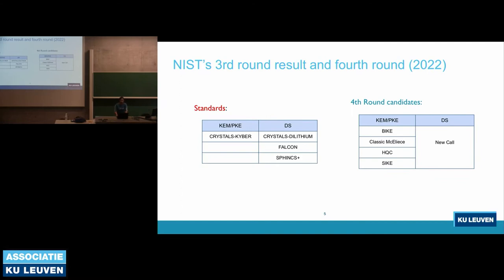In last July, NIST announced standards. For KEM or PKE, they selected Crystal Kyber as a standard, and they selected three digital signature algorithms. For fourth-round candidates, they advanced a few KEM or PKE schemes for further analysis, and they decided to open a new call for digital signatures.